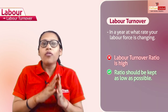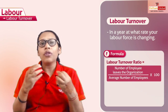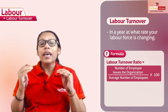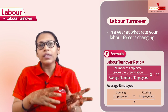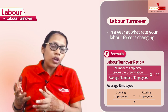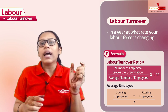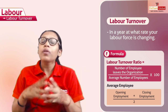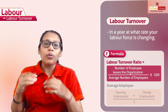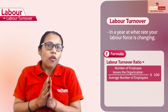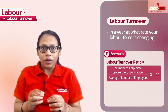Coming to the formula of Labour Turnover, the formula is very simple. Number of employees who left the organisation, divided by the average number of employees. Average employees means opening employees — the employees on 1st January — plus closing employees — the employees on 31st December — divided by 2. That gives you the average number of employees during the year. So the final formula is: number of employees who left the organisation divided by average number of employees during the year, multiplied by 100. Through this formula, we get the Labour Turnover rate.